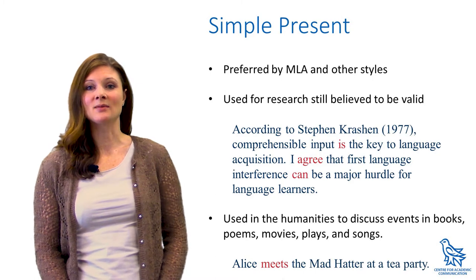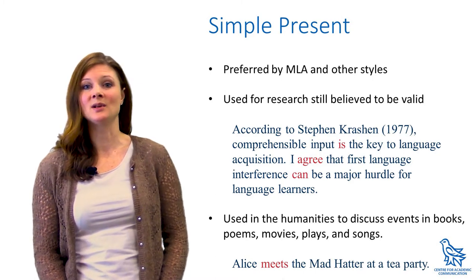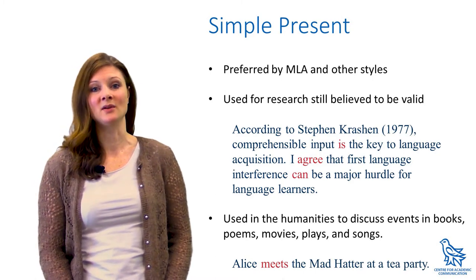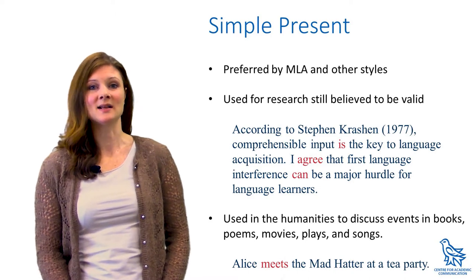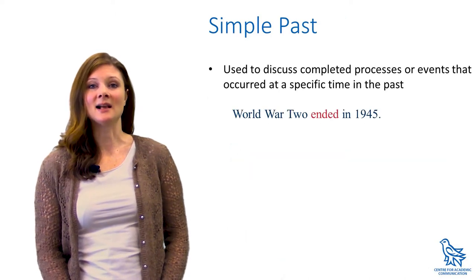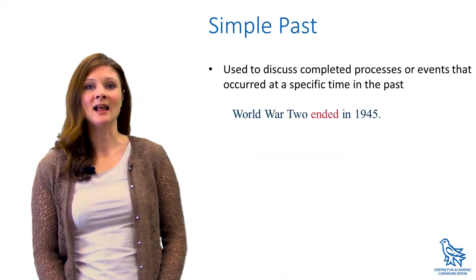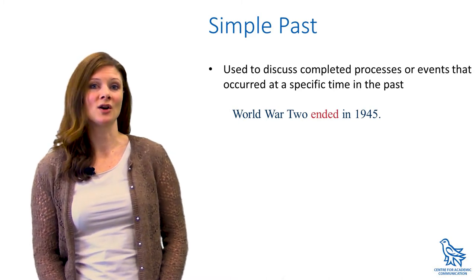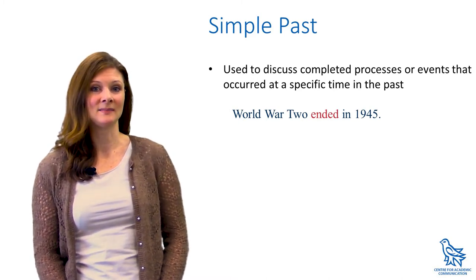The convention in academic writing in the humanities disciplines is to address the events in books, poems, movies, plays, and songs in the present tense. The simple past is also common in academic writing and is used to discuss completed processes that occurred at a specific time in the past.